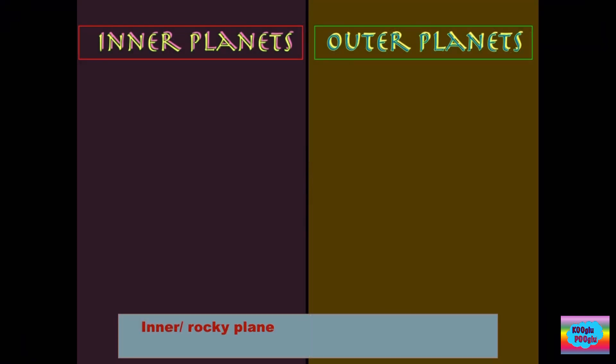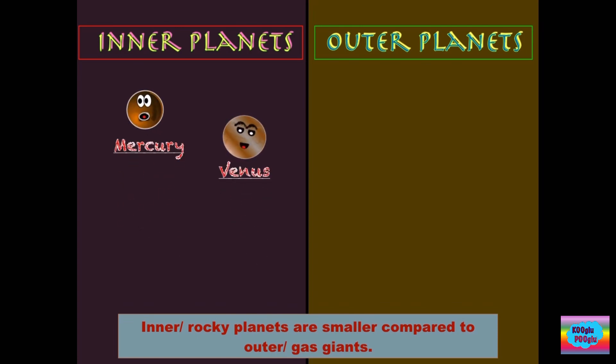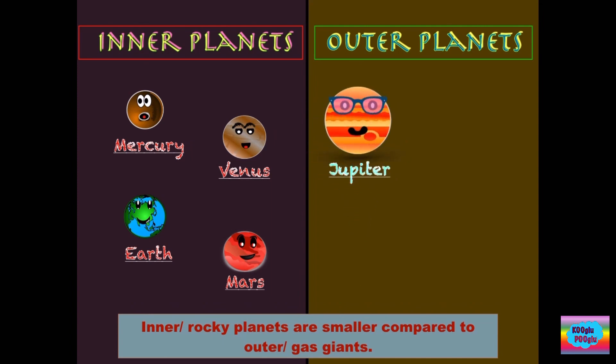Inner or rocky planets are smaller compared to outer or gas giants. Inner planets are Mercury, Venus, Earth, and Mars, and our outer planets are Jupiter, Saturn, Neptune, and Uranus.